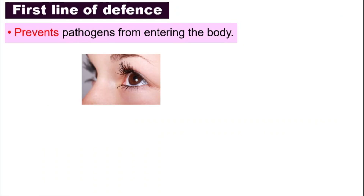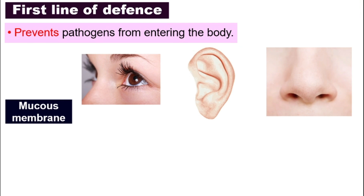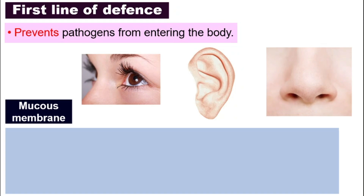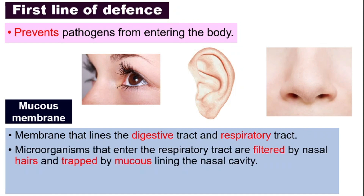Isn't that cool? Other than that, there are other openings like our eyes, ears, and nose where pathogens can still enter. So another element that comes into play is the mucus membrane. The membrane that lines our digestive tract and respiratory tract can also prevent pathogens from entering our body. For example, if the microorganism tries to enter our respiratory tract through our nose, it will be filtered out by the nasal hairs, and they might also be trapped by the mucus lining in the nasal cavity. The mucus is the sticky liquid in your nose that traps microorganisms so they don't get inside our body.